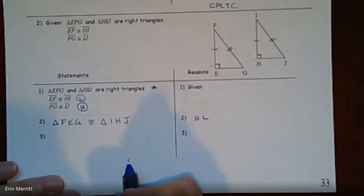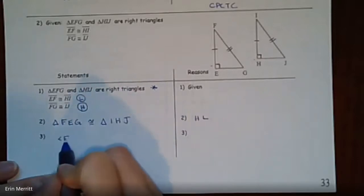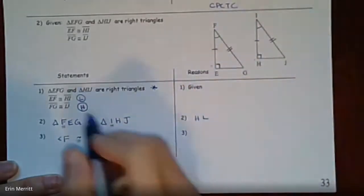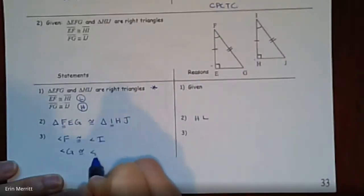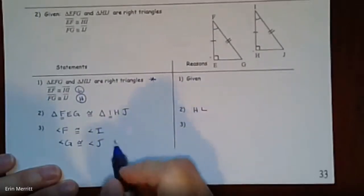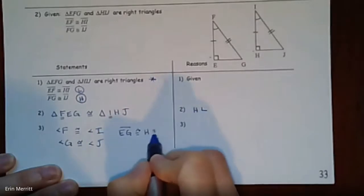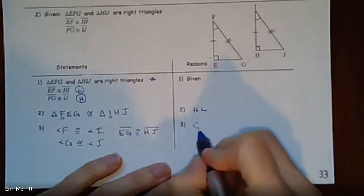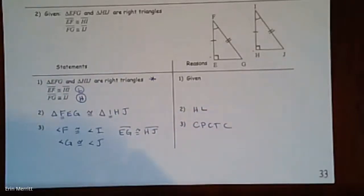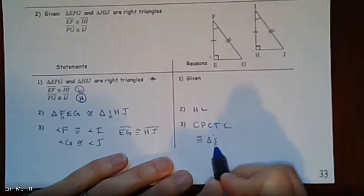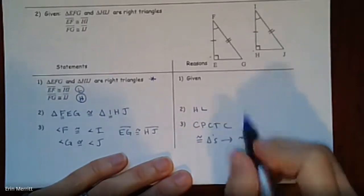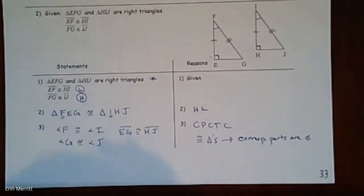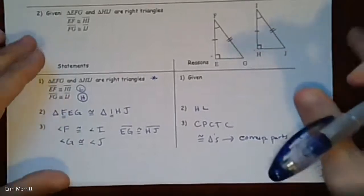For the third part of that example, the other pieces we now know are congruent: angle F must be congruent to angle I, angle G must be congruent to angle J, and side EG must be congruent to side HJ. The reason is corresponding parts of congruent triangles are congruent — CPCTC. You can write it either way; just remember that you need the triangles proved congruent first, then all matching pieces must be congruent.